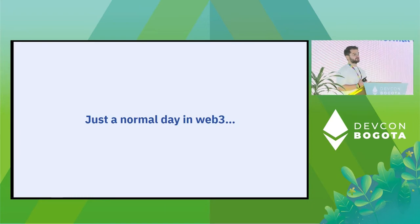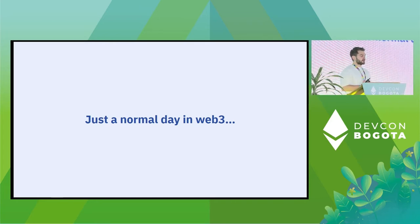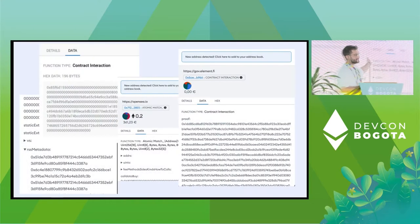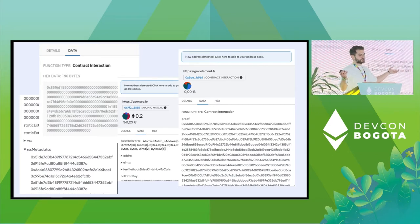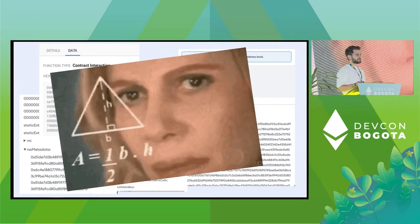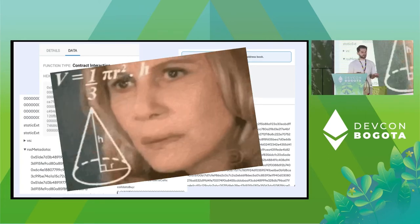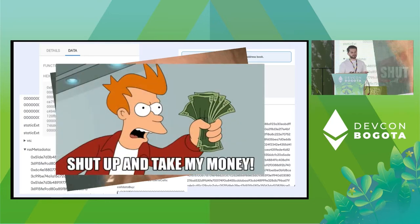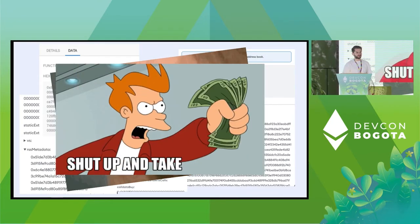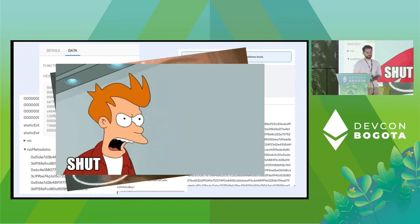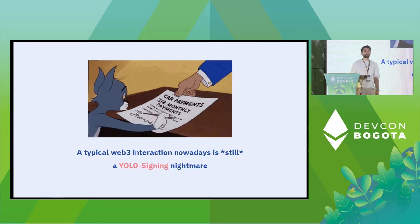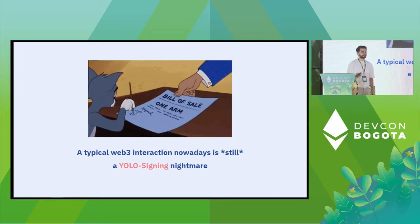I'll start by showing you something you're all familiar with — just a normal day in Web3. You see things like this in your wallet and you basically have no idea what's going on. You're not a machine. You don't understand it. Am I doing the right thing? Am I talking to the right contract? Is this doing what I want to do? You just tell it to shut up and take your money. Today a typical Web3 interaction is still a YOLO signing nightmare.